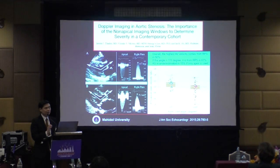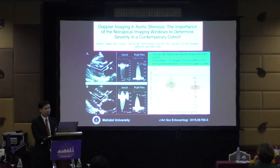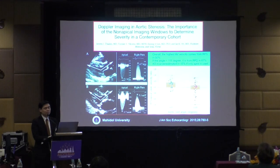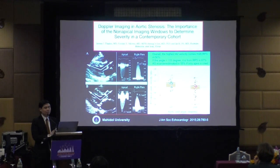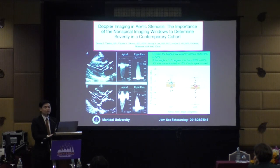A publication from Mayo Clinic showed that if the angle between the LV and aorta is less than 15 degrees, the right parasternal view will yield higher velocity than the apical view. This is pitfall and pearl number one — try the right parasternal view, especially in the elderly.